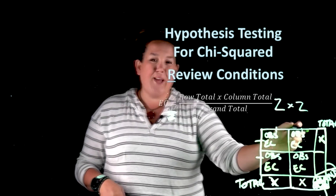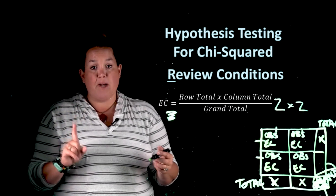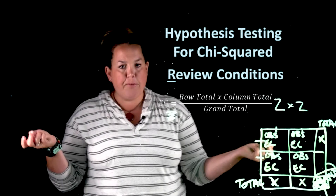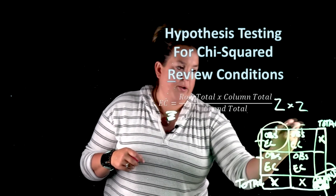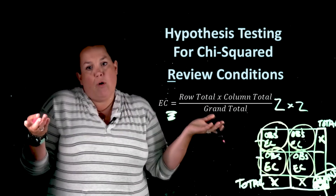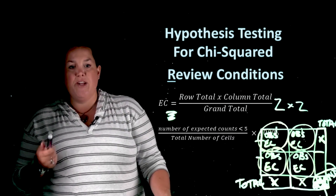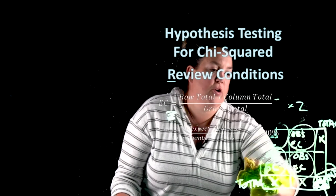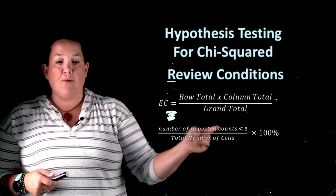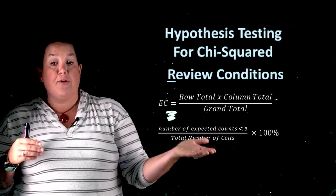After you calculate all the expected counts, you have to verify whether your conditions are met. You can easily check if all expected counts are greater than or equal to one. For the second condition, you need less than 20 percent of cells with an expected count less than five. In a two-by-two table, each cell represents 25 percent (one divided by four), but for larger tables the formula is: the number of expected counts less than five divided by the total number of cells.